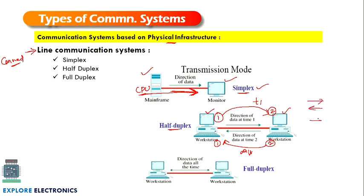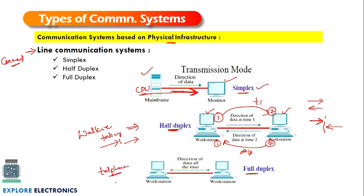In half duplex, only one communication happens at a time. The best example is a walkie-talkie — one policeman gives information to the other, and only after completion does the other start communicating. Full duplex is like telephone communication where two users can talk simultaneously. Simplex is like TV communication where data is sent only in one direction to the receiver.